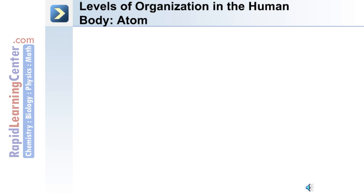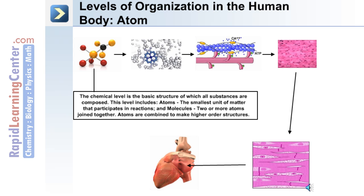Organization at the level of the atom: the chemical level is the basic structure of which all substances are composed. This includes atoms — the smallest unit of matter that participates in reactions — as well as molecules, which are formed when two or more atoms join together. Atoms are combined to make higher ordered structures.